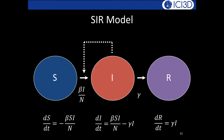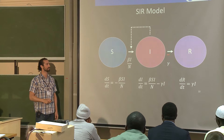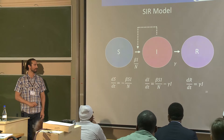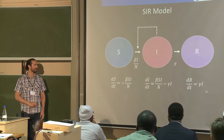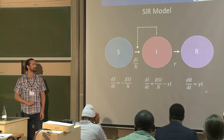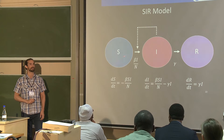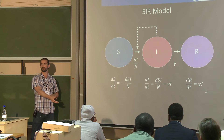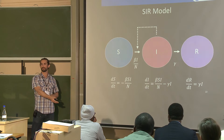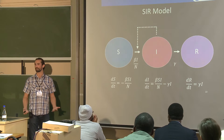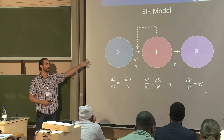With these parameterizations, we can write a system of differential equations. dS/dt equals the negative rate at which people leave S. dI/dt equals the rate in minus the rate out. dR/dt equals the rate into R. These equations tell us the rate of change in the number of susceptibles, infected, or recovered individuals over time.